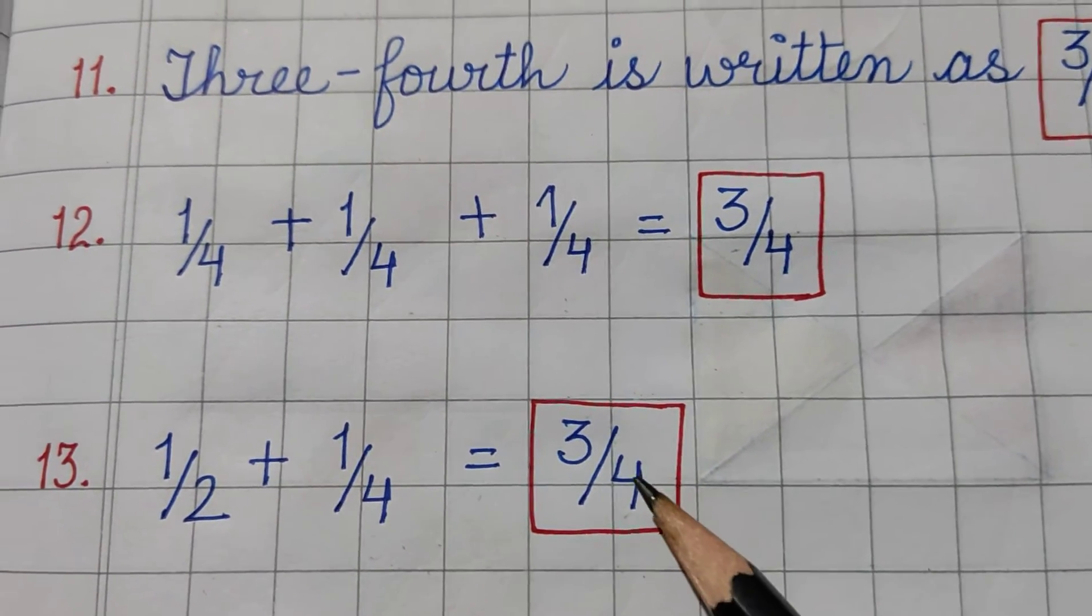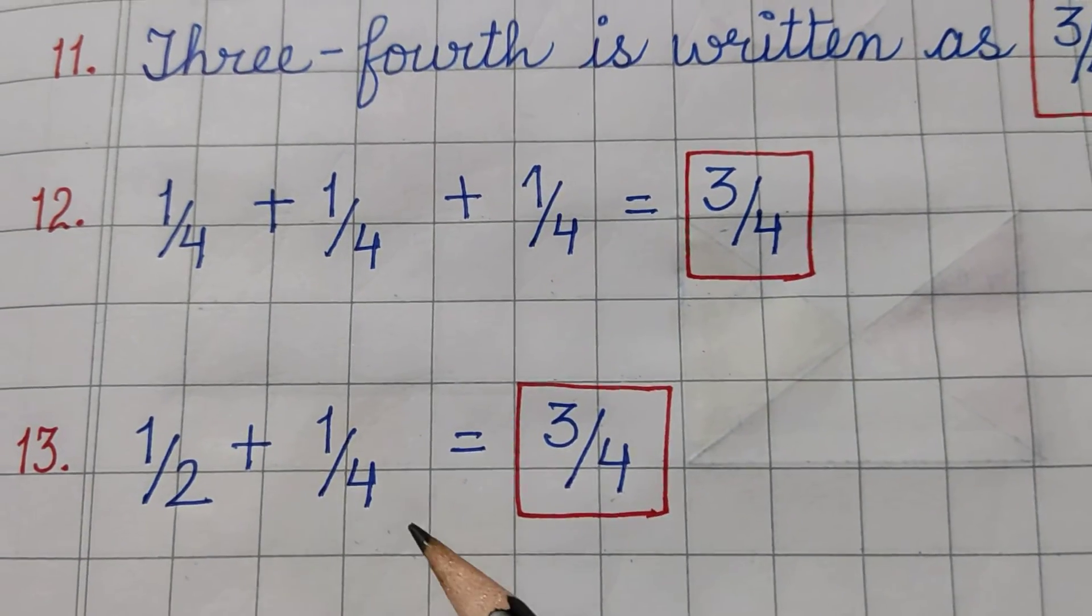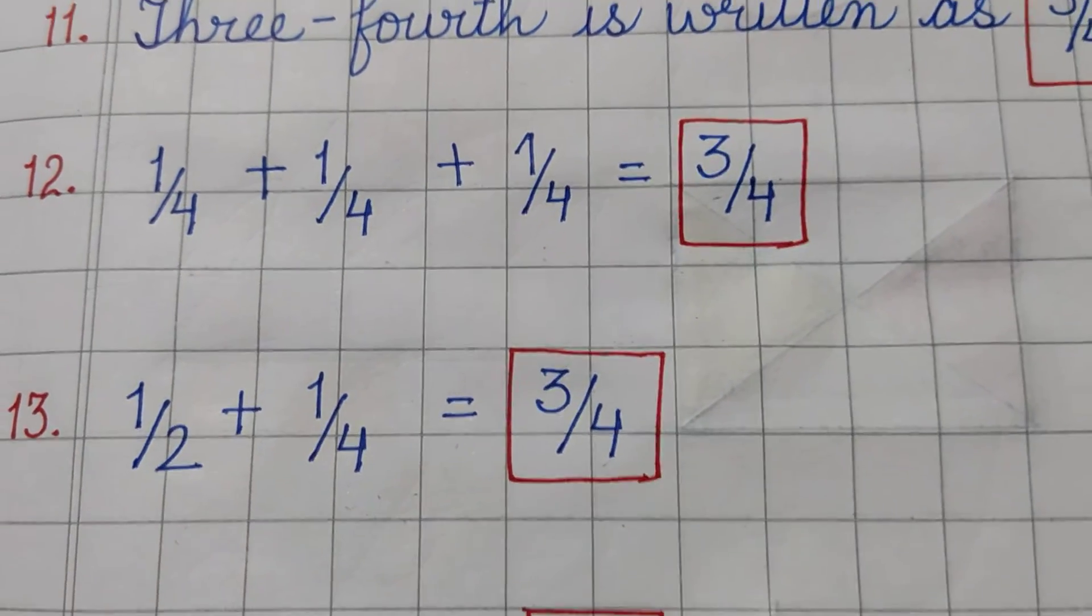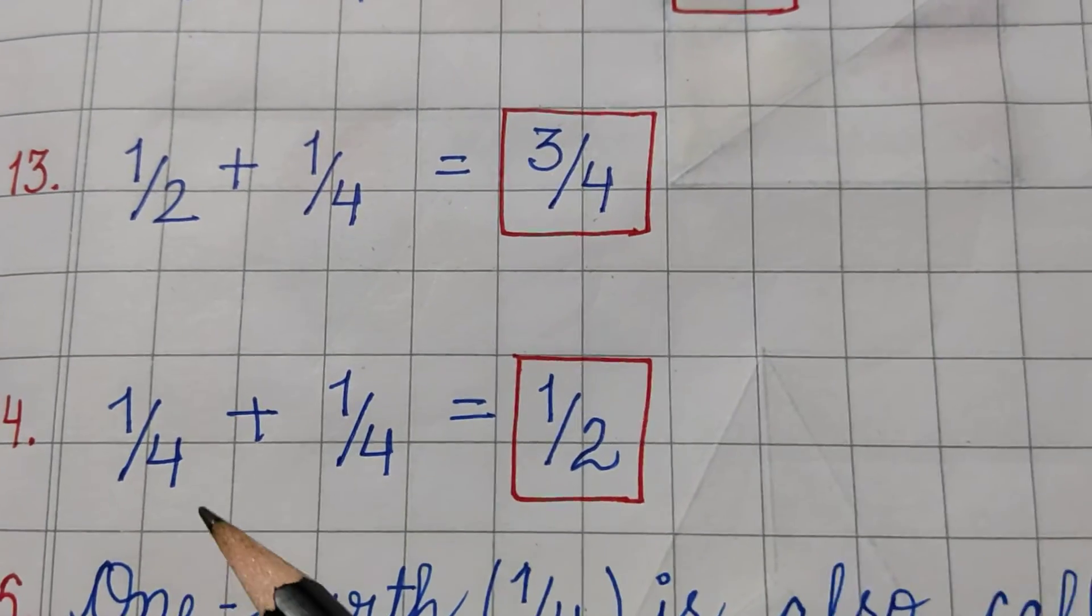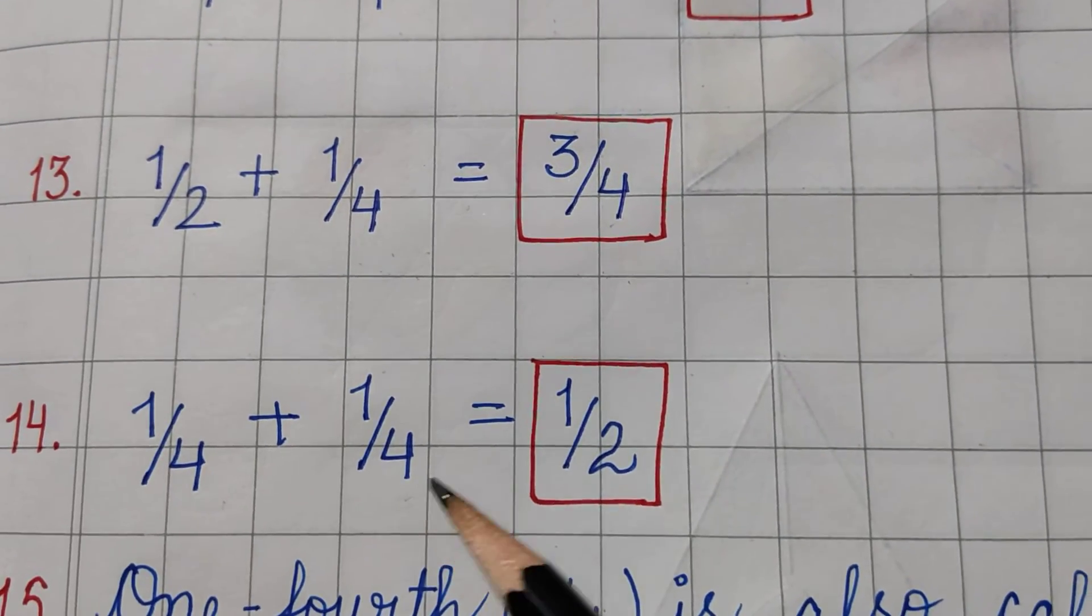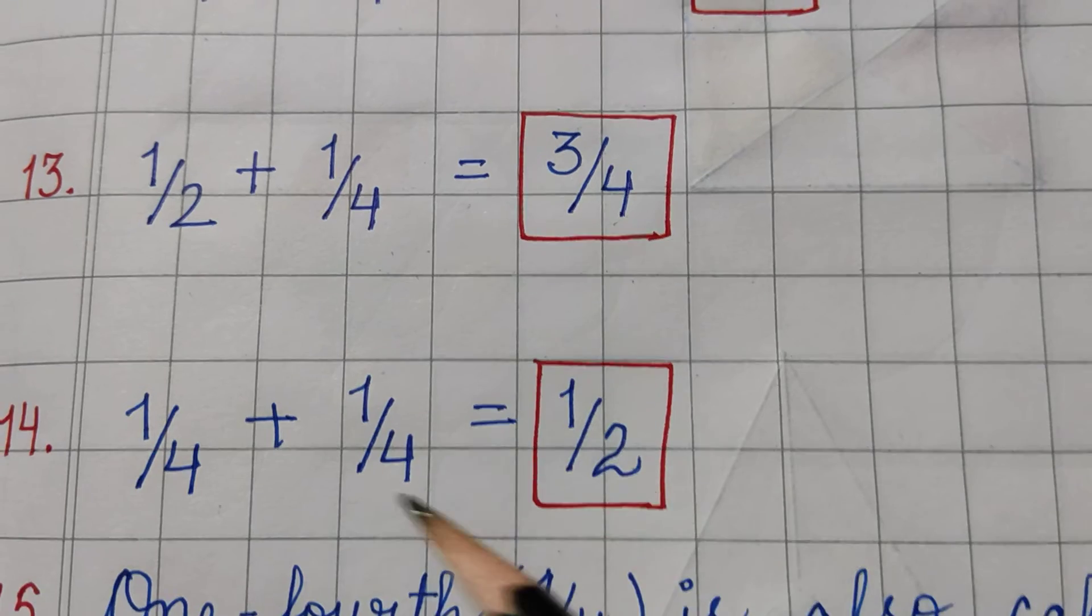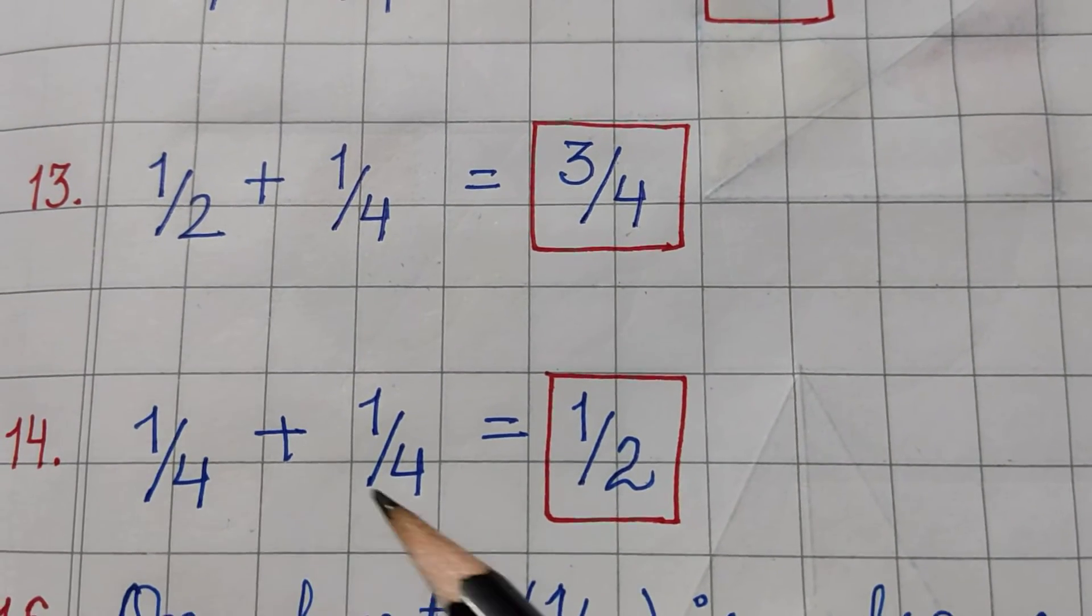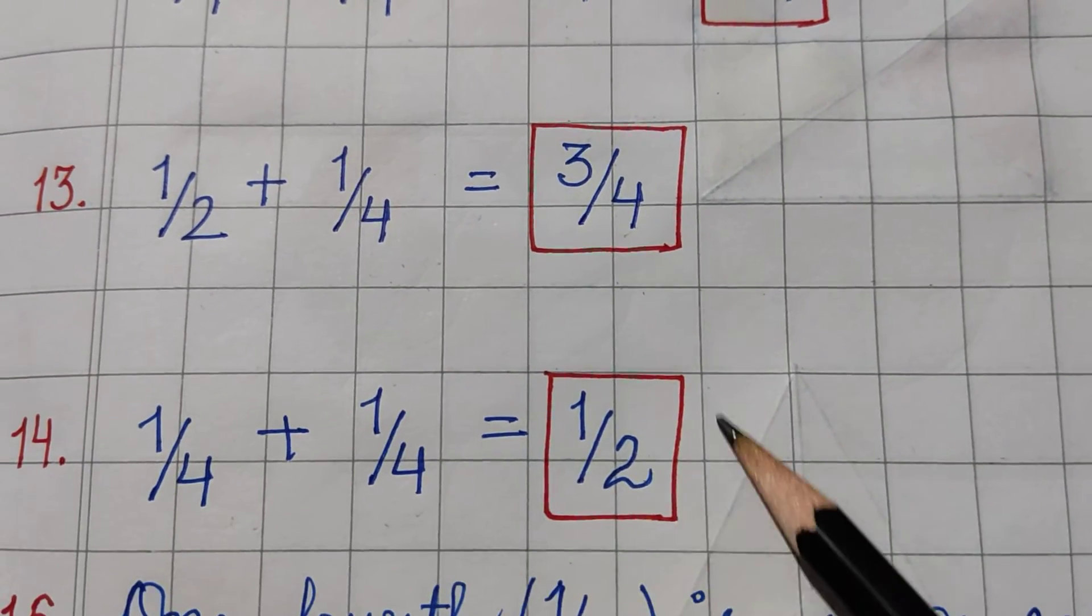Now the next one, 14th part is 1 upon 4 plus 1 upon 4 is equal to half. If there are 2 quarters, then they equal one half.